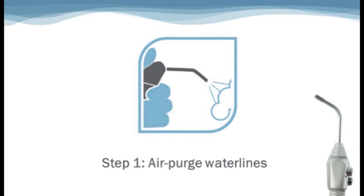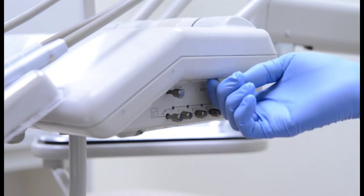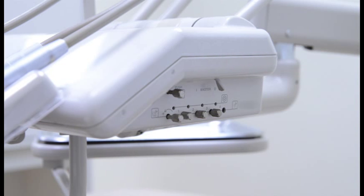Now we are ready to begin with step one, Air Purge Dental Unit Waterlines. To air purge, turn the dental unit off so it releases the pressure in the bottle. You can do this by using the master control, which is usually on the side of your dental unit.